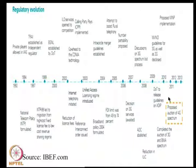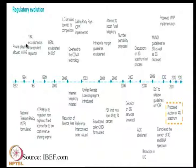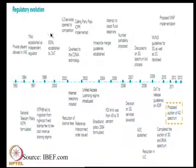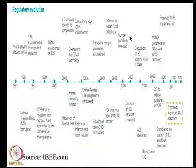The evolution of regulation from 1992 onward: private players were allowed, and a National Telecom Policy was formulated in 1994. TRAI — the Telecom Regulatory Authority of India — was established as an independent regulator in 1997. In 1999, the NTP led to migration from high-cost fixed license fees to low-cost revenue sharing. BSNL was established, internet telephony was initiated, license fees were reduced, a broadband policy was formulated, and the FDI limit was raised from 49% to 74% in 2004.